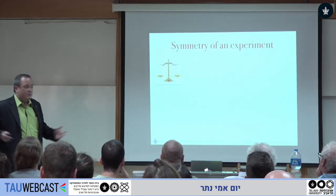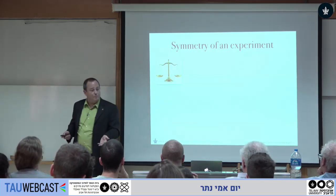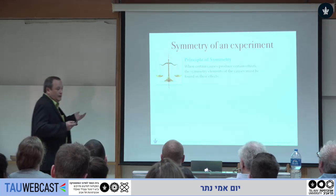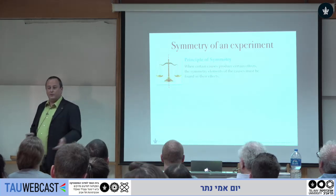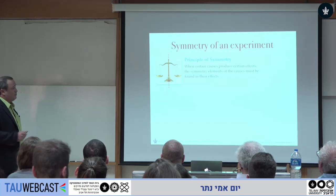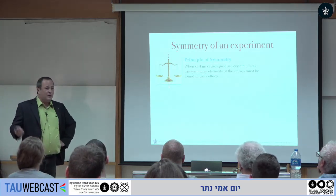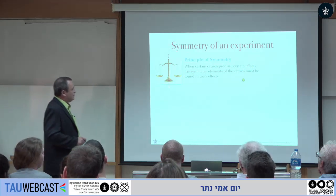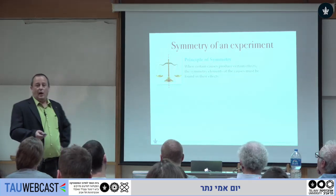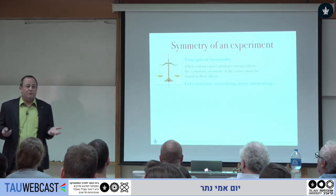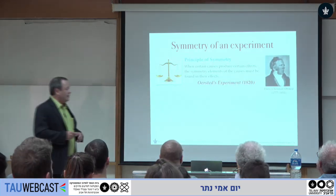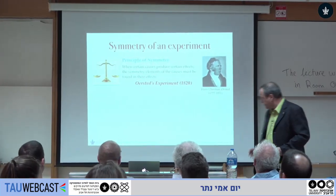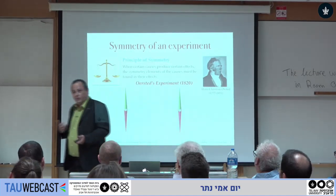In terms of looking at the symmetry of an experiment: if these are my scales and I want to predict what will happen if I let go, this clearly has reflection symmetry. Because of the symmetry, we can immediately say in advance that nothing is going to happen — there's no reason for one side to tip in a particular direction that breaks the symmetry.